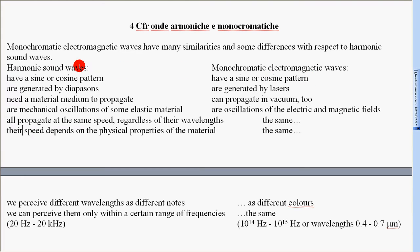Harmonic sound waves are generated by diapasons. Monochromatic electromagnetic waves are generated by lasers. Harmonic sound waves need a material medium to propagate. Monochromatic electromagnetic waves can propagate in vacuum too.